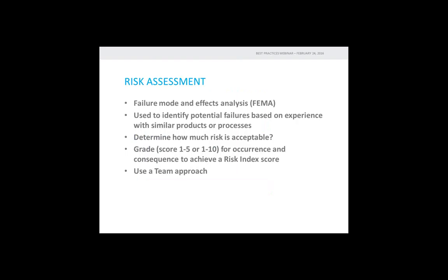One method for performing a risk assessment effectively is a Failure Mode and Effects Analysis, commonly called FMEA. A FMEA approach identifies potential failures with products or processes, and is a method of determining and defining risk. It uses a simple grading system to achieve a risk index score, works best as a team approach so no single individual misses risks, and provides consistency in your risk assessment.